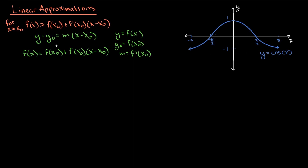We can simplify this notation for x values near 0. Under that case, f of x is approximately f of 0 plus f prime of 0 times x. Now, why don't you find the linear approximation of cosine of x, which is graphed here, for x values near 0?